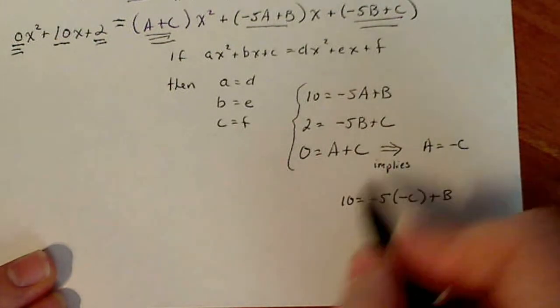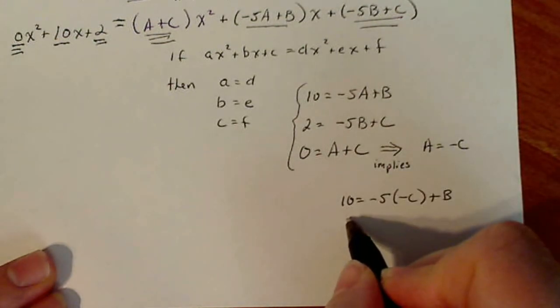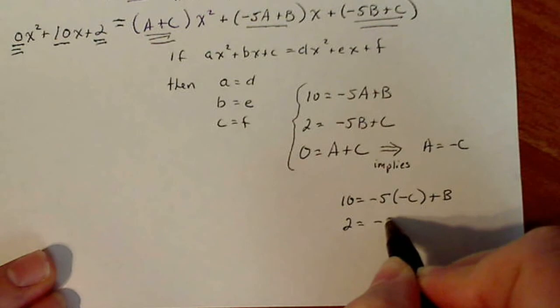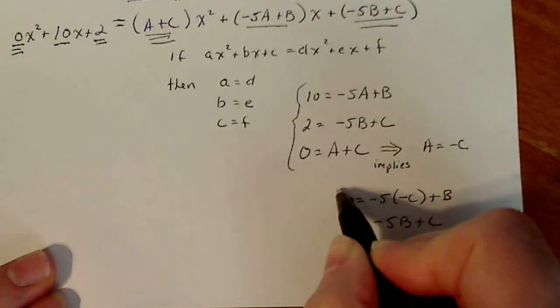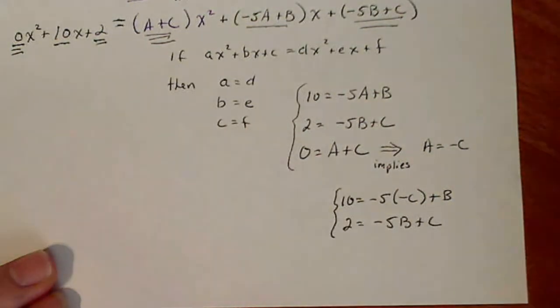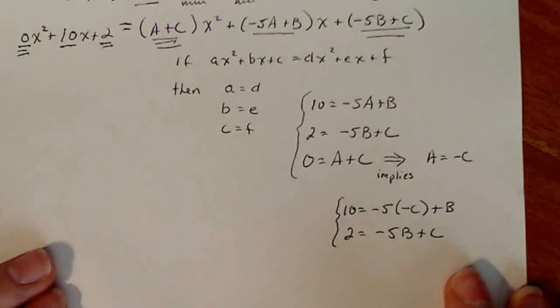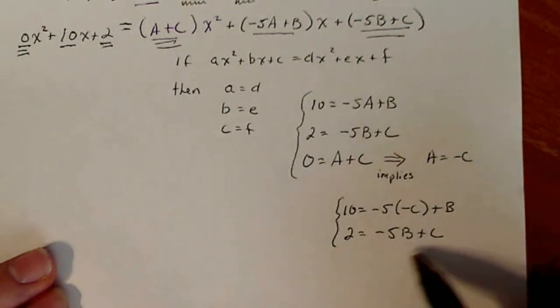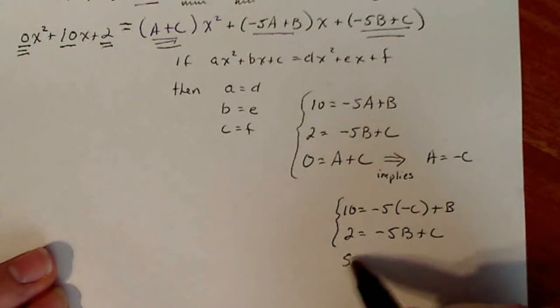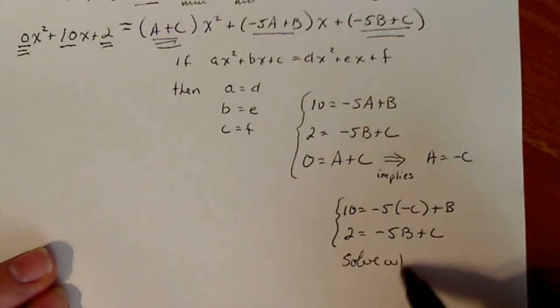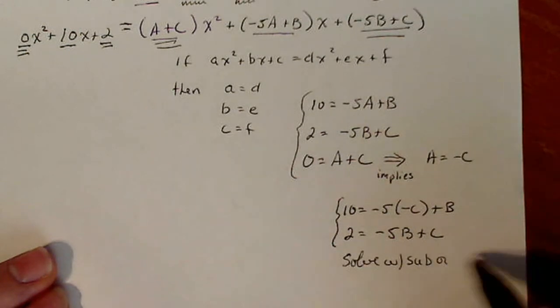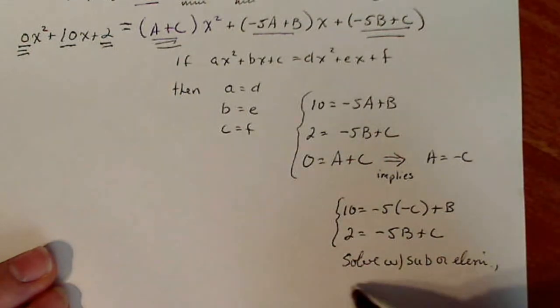And then that also means that two equals minus five b plus c. And now this is a real straightforward system that you should be able to solve with substitution or elimination. And then once you find B and C, so let's say solve with substitution or elimination, elimination of variables, then sub in.